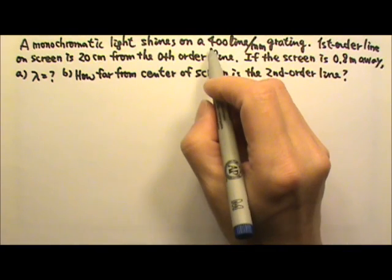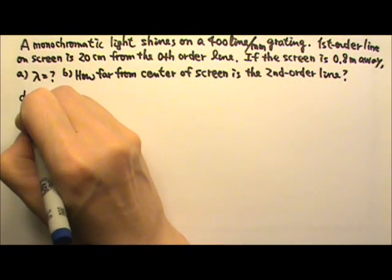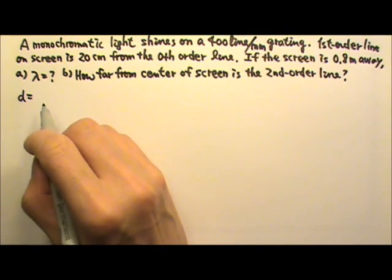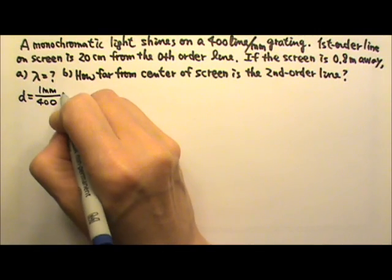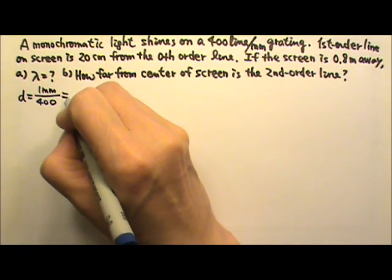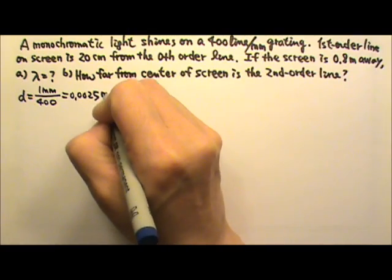The grating has 400 lines per mm. That means the distance D between adjacent lines would be 1 mm divided by 400. So the distance between the lines would be 0.0025 mm.